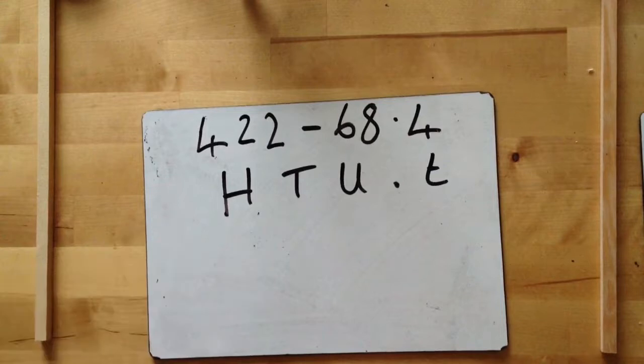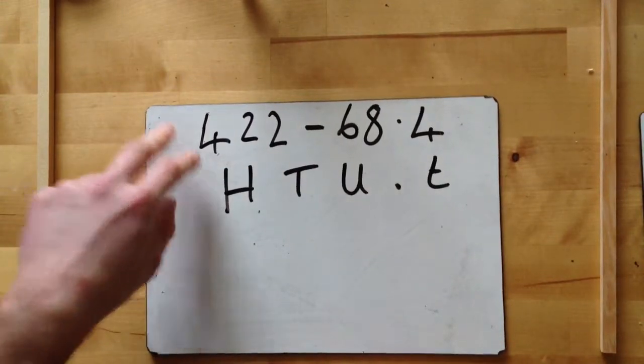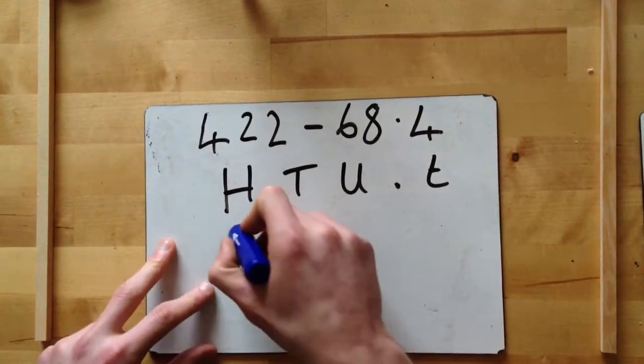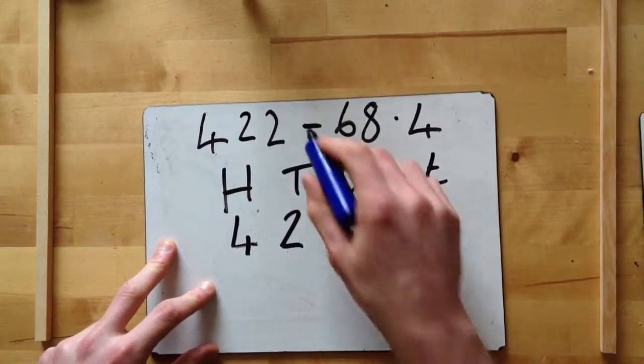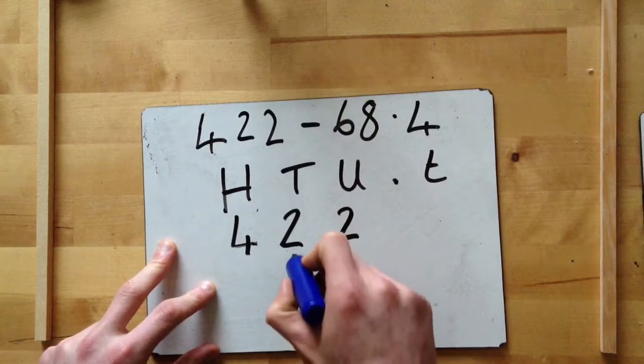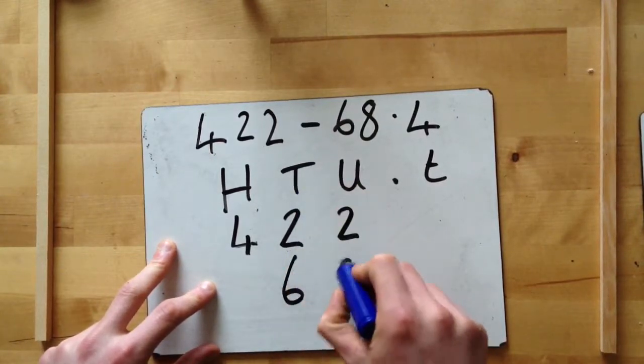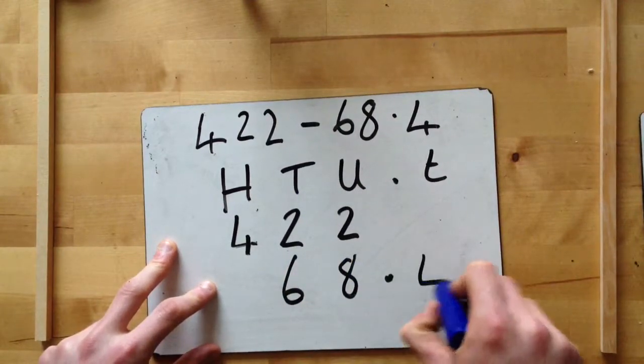Always with subtraction, you put the first number at the top. So we put 422 take away 68, we can show it's in the right column: tens, units, point four.